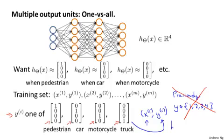And hopefully we can find a way to get our neural network to output some value so that h(x) is approximately y. And both h(x) and y^(i), both of these are going to be, in our example, four-dimensional vectors when we have four classes.